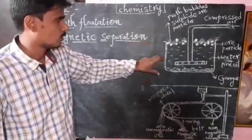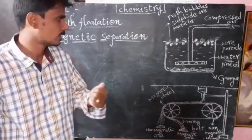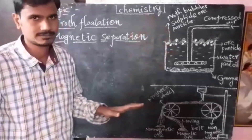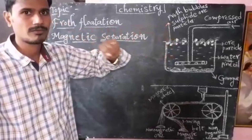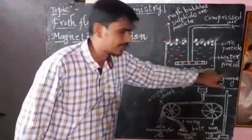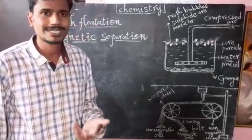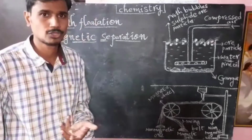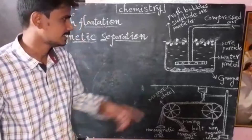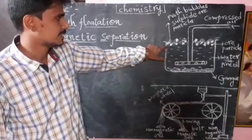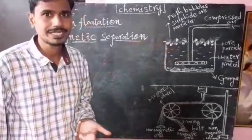Whatever the crushed, finely divided powder ore we have, we keep it in the froth flotation cell. After placing the powder form of ore in the froth flotation cell, we add pine oil. Pine oil is added to the froth flotation cell to produce effective froth.